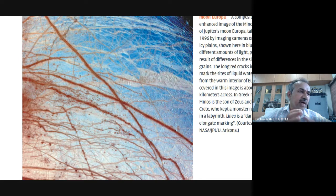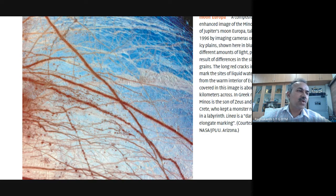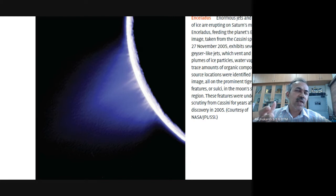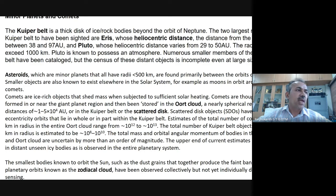For Jupiter's moon Europa, recent images show a lot of water — bluish colors indicate water or icy sites, and red lines from electromagnetic spectrum analysis show where liquid water is located. Missions to Europa are being planned. Enceladus, found by the Cassini spacecraft, is full of ice with ice jets — geysers — ejecting ice into space.